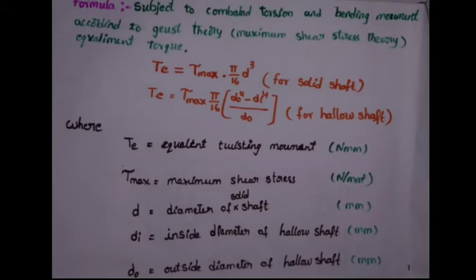Where T is equal to equivalent twisting moment in Newton millimeters, tau max is equal to maximum shear stress in Newton per mm square, d is equal to diameter of solid shaft in mm, d i is equal to inside diameter of hollow shaft, d o is equal to outside diameter of hollow shaft, units in mm.